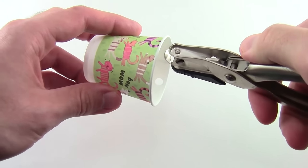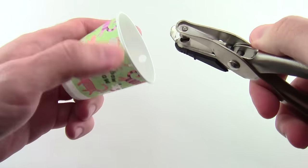Start by using the hole puncher to punch four holes opposite each other just below the rim of one of the cups.